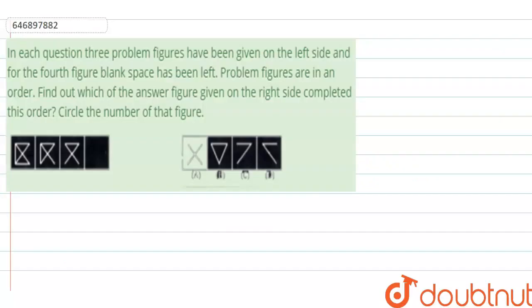Hello, kids. The next question is from Reasoning. In these questions, three problem figures have been given on the left side and for the fourth figure a blank space has been left. Problem figures are in an order. Find out which of the answer figures given on the right side complete this order. Circle the number of that figure.